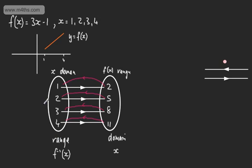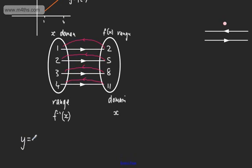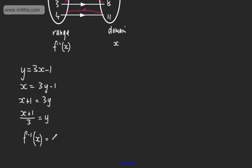Let's look at the process we can use to find the inverse. We let y be equal to 3x minus 1, interchange x and y, and set about making y the subject. So we have x equals 3y minus 1. Adding 1 to both sides: x plus 1 equals 3y. Dividing both sides by 3: y equals (x plus 1) over 3. At this stage, we change y for f to the minus 1 of x — this is the inverse function: f⁻¹(x) = (x + 1)/3.